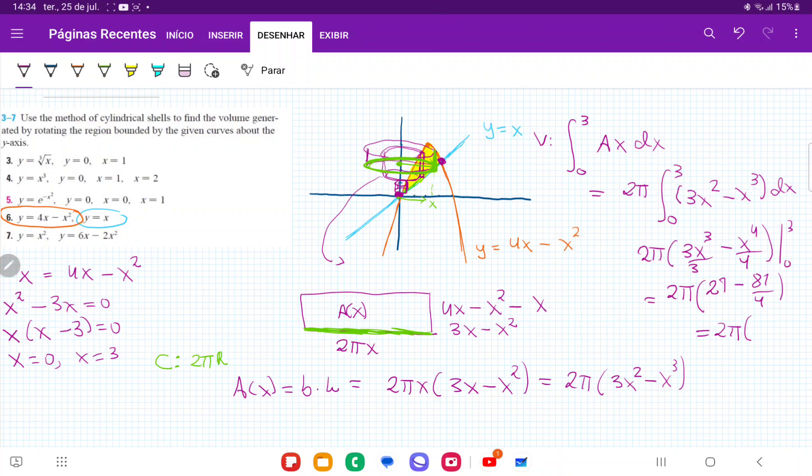So this gives us 2 pi times 27 minus 81 over 4. Let me put that in my calculator. Minus 81 over 4 plus 27, which is equal to, this 2 cancels out with the 4, it just becomes 2 below. So 27 pi divided by 2. And that is the volume that we get when we revolve this area about the y-axis.